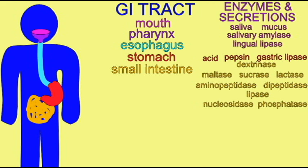The small intestine produces a long list of enzymes. Dextrinase to break down oligosaccharides, maltase, sucrase, and lactase to break up the disaccharides maltose, sucrose, and lactose.